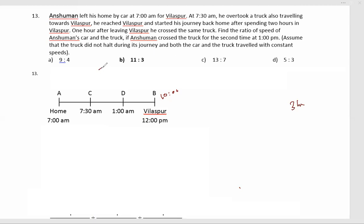So if the total distance is 6k, this is k, this is 2k, that means this is 3k.